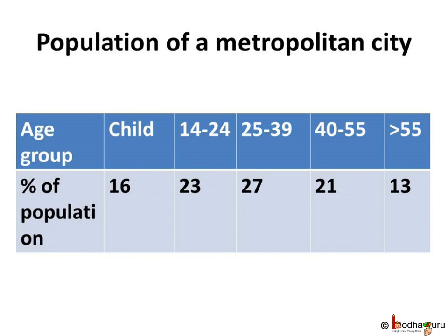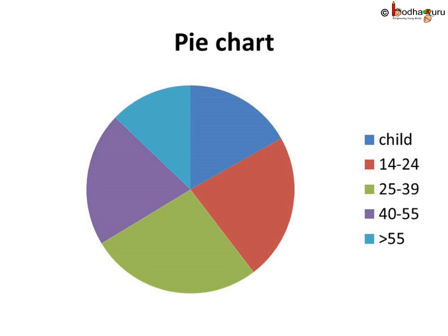Let us see one more example of a pie chart. Say in a metropolitan city, 16% of the population is children, 23% of the population are people belonging to the age group 14 to 24, 27% belong to the age group 25 to 39, 21% belong to the age group 40 to 55, and 13% are older than 55 years of age. If we draw a pie chart in this case, it clearly gives the idea of age distribution in that metropolitan city. Here we are comparing different parts — that is, different age groups — in the population.